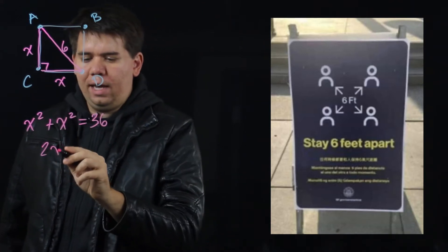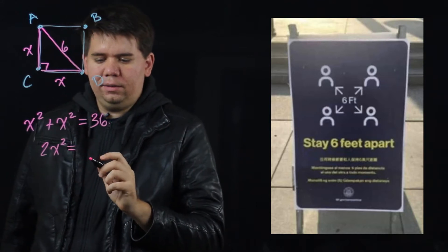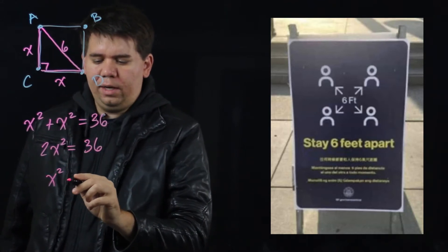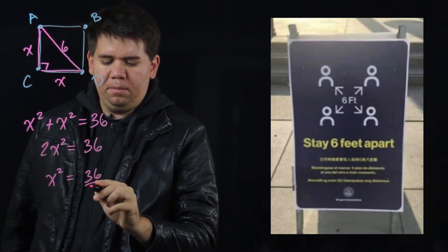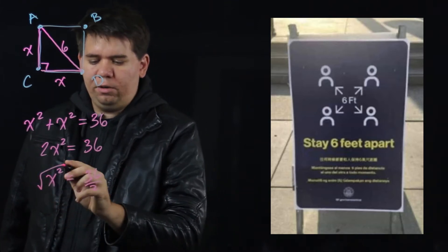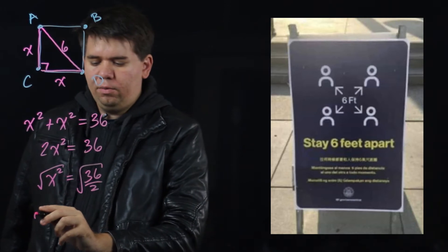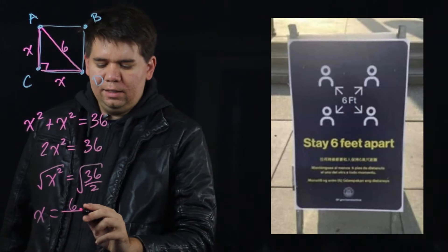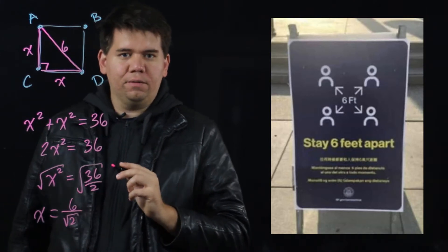Simplifying, you get 2x squared is 36 or x squared is 36 divided by 2. Taking the square root of both sides, we see that x is equal to the square root of 36, 6 divided by the square root of 2.